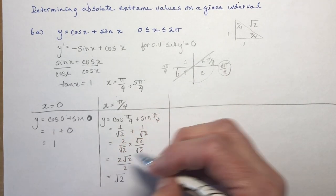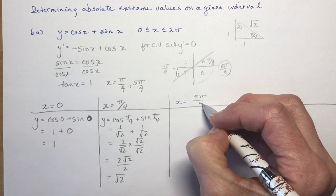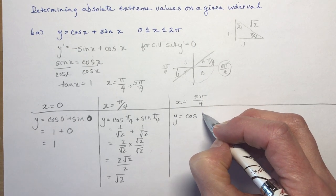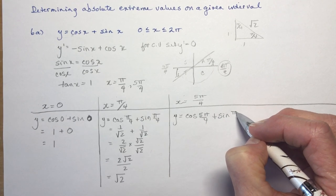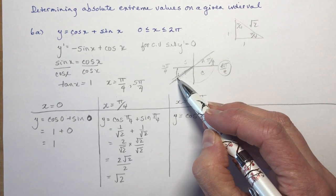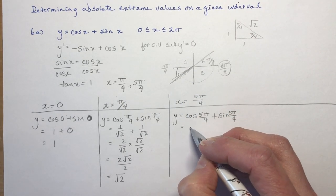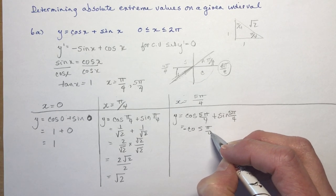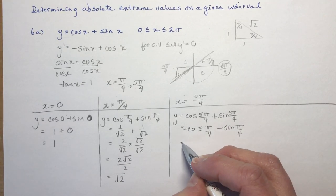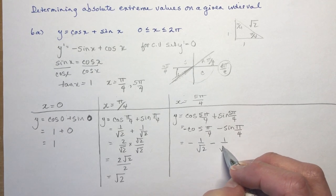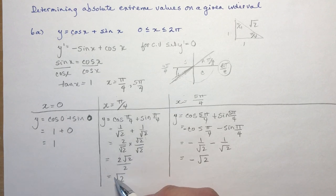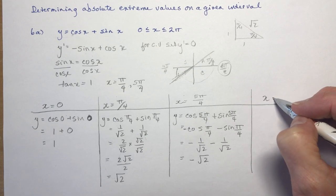Moving on to x equals 5π over 4: y equals cos(5π/4) plus sin(5π/4). At 5π/4 I'm in the third quadrant, where both cos and sine are negative. So this is the negative cos(π/4) plus the negative sin(π/4) — these are the related acute angles with appropriate signs. That gives minus 1/√2 minus 1/√2, which is minus 2/√2, or minus √2 after rationalizing.